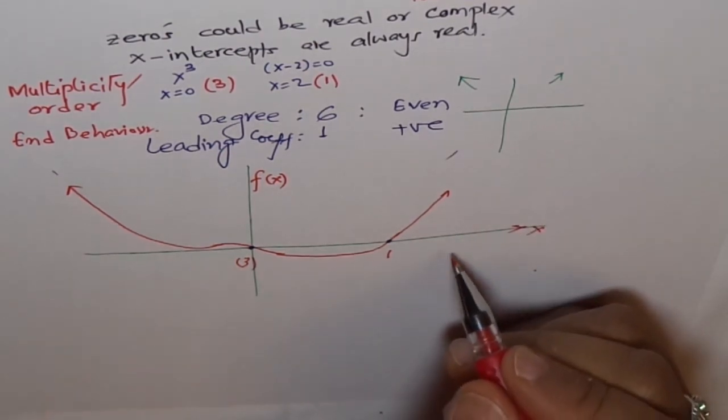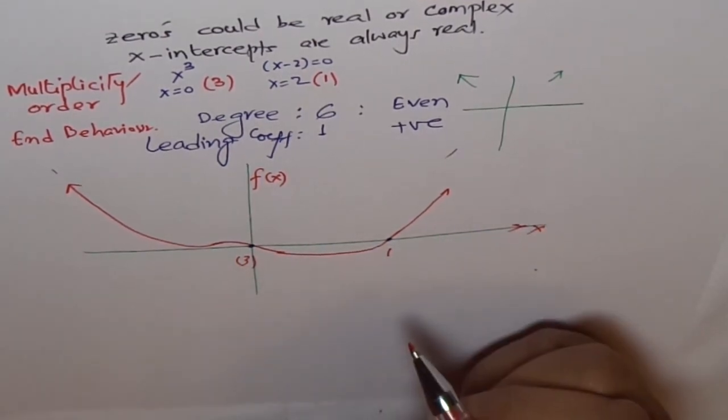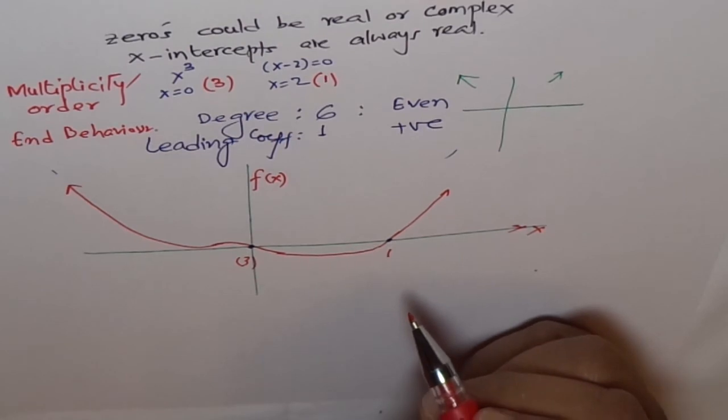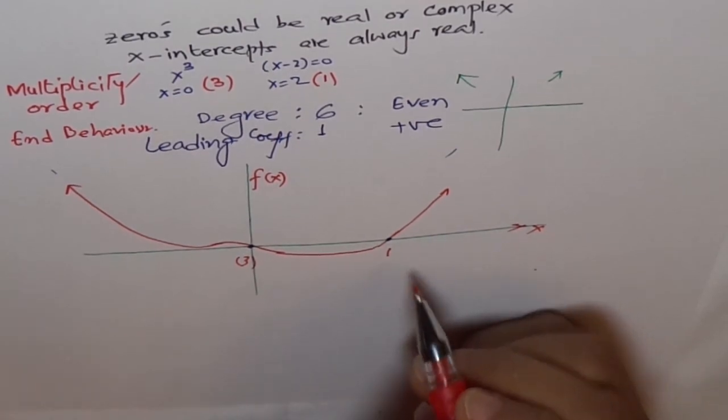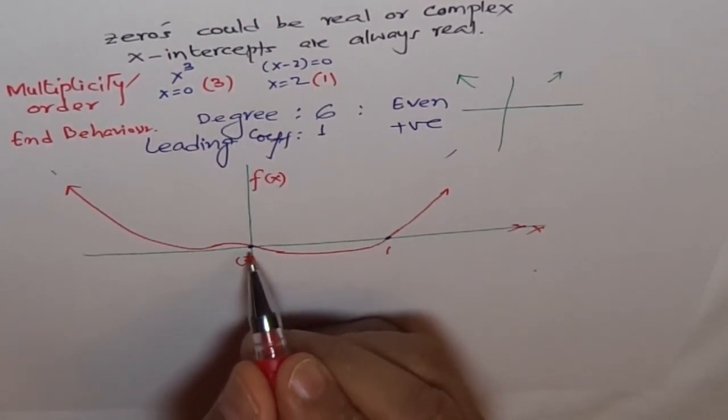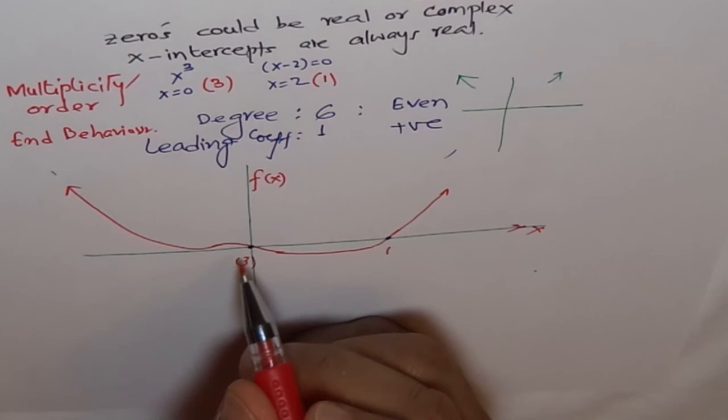Now, how are zeros different from X intercepts? Well, at this point, you can see that zeros also give you the behavior of the curve at X intercept.